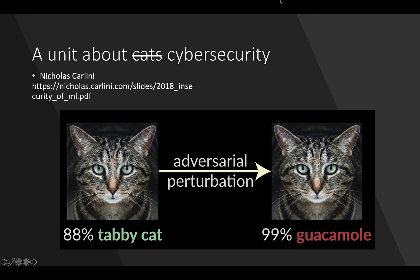In this picture we are seeing a cat which is being recognized by a machine learning algorithm as a tabby cat with 88% confidence. With the slightest bit of perturbation, adjusting the image in a particular way, we can get that same machine learning algorithm to recognize it as guacamole with 99% certainty. This is an example of a targeted attack against a machine learning algorithm and comes from Nicholas Carlini, who's very prominent in this field.